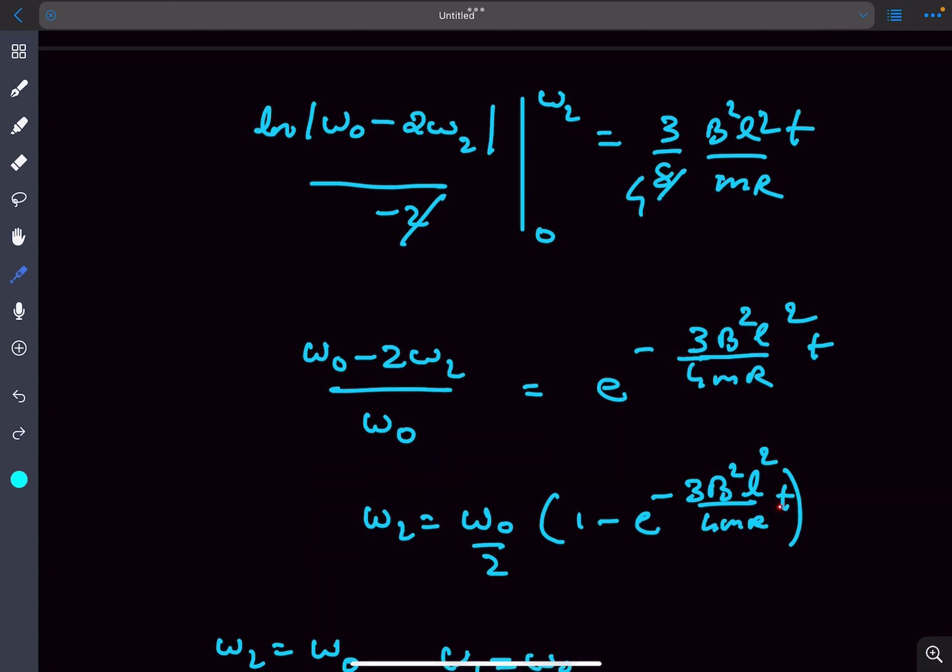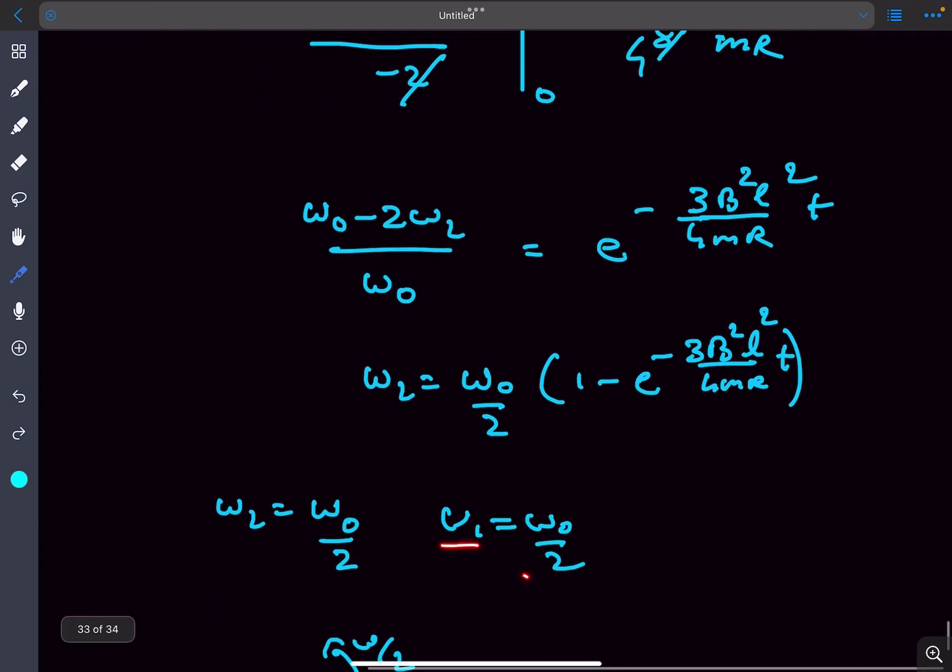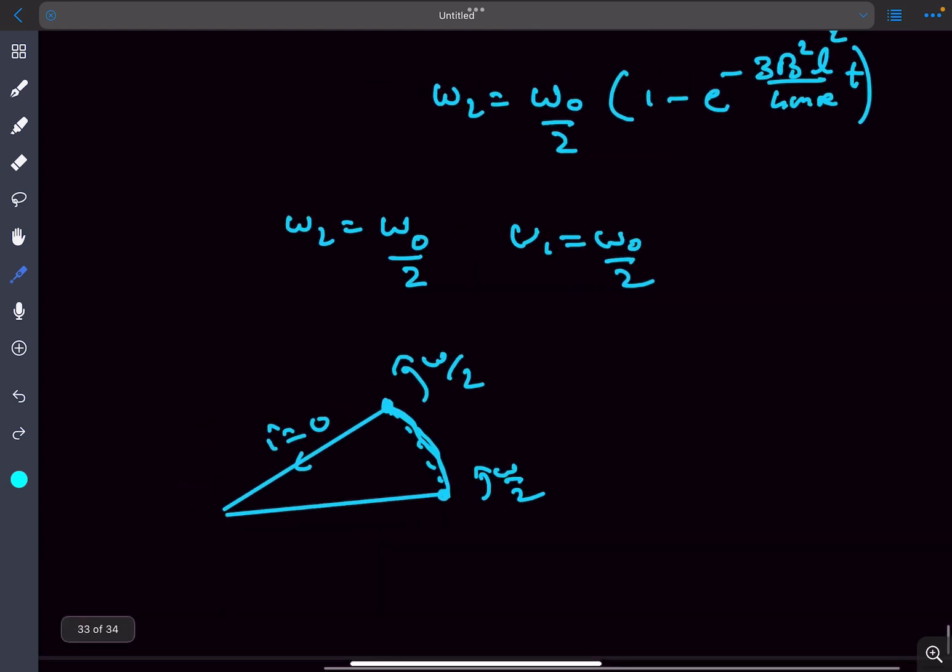Now if you see carefully, after a very long time or if you tend t to infinity, this term would tend to 0 and omega 2 will be tending to omega naught by 2, which means omega 1 will also tend to omega naught by 2. So after a very long time, both the rods have the same angular velocity of omega naught by 2. What will happen is there is no flux change associated with this loop anymore and the current induced would become zero.